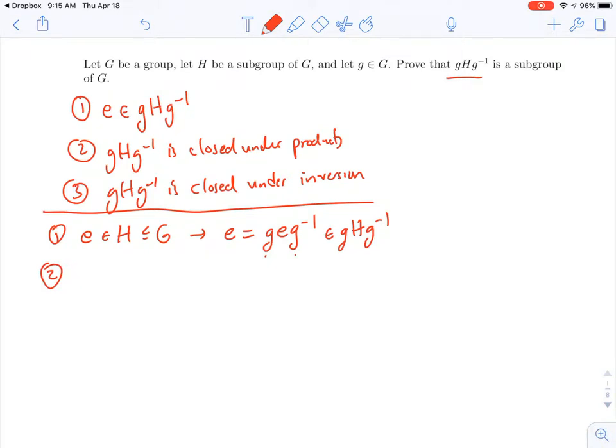All right, so now we show that it's closed under products. So I need to take two different elements, well, not necessarily different, but two elements of gHg inverse. So let me let, say, little h and little k be elements of H, and that'll give me two elements of gHg inverse. So g little h g inverse, and g little k g inverse.